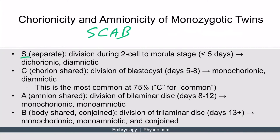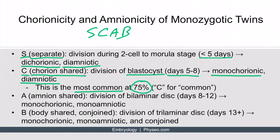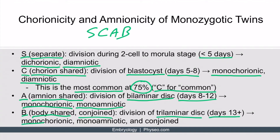This slide lists the details we just explained. Remember the mnemonic SCAB: S stands for separate — division during the two-cell to morula stage (less than 5 days) gives separate chorions and amnions. C means the chorion is shared — division at the blastocyst stage (days 5 to 8) results in monochorionic but diamniotic twins; this is also the most common type of monozygotic twinning, occurring 75% of the time, so C also stands for common. A means the amnion is shared — division of the bilaminar disc (days 8 to 12) gives monochorionic and monoamniotic twins. B means the body is shared — division of the trilaminar disc (day 13 and above) results in monochorionic, monoamniotic, and conjoined twins.